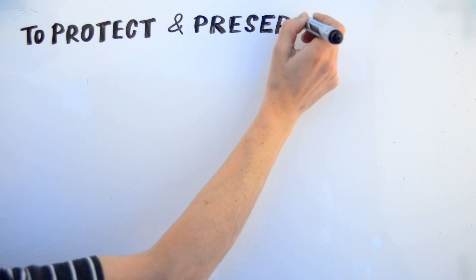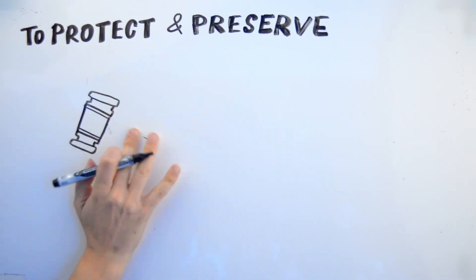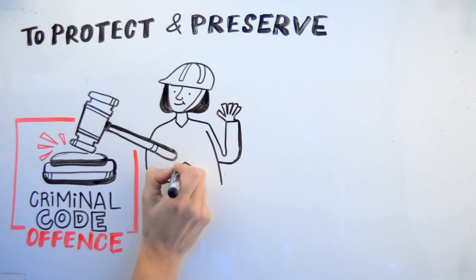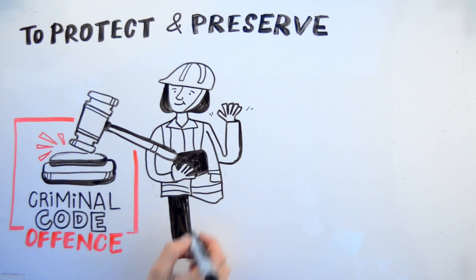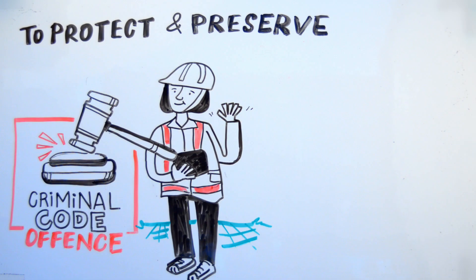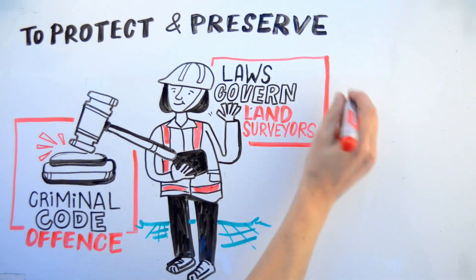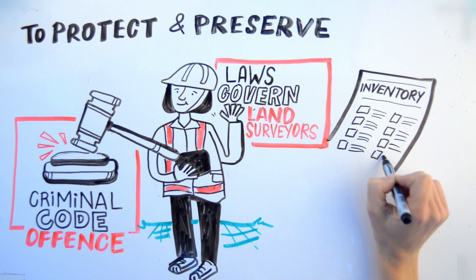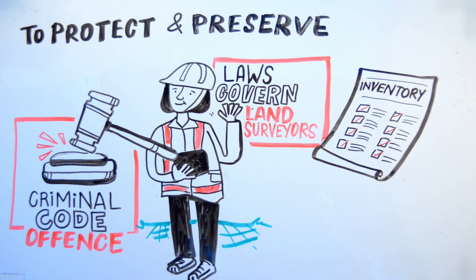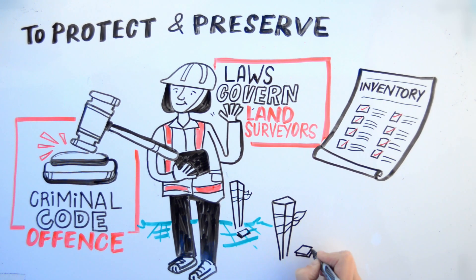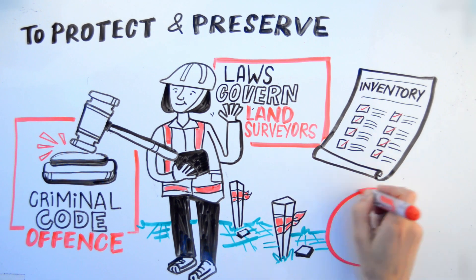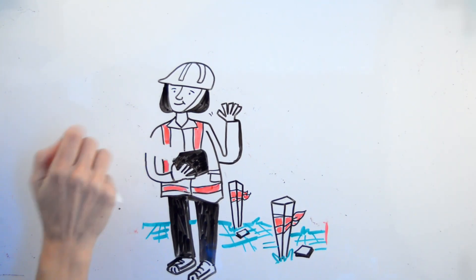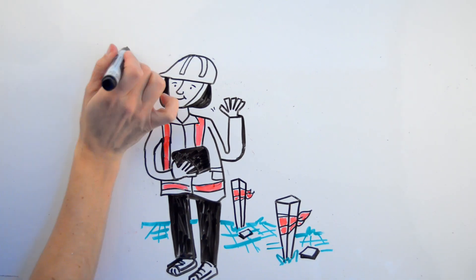What's in place to protect and preserve survey infrastructure? It is a criminal code offense to remove a property monument. There are laws that govern land surveyors when they set property monuments. Standards include inventory of property monuments, installation of visible markers, and the replacement of missing property monuments. There are best practices that promote common utility corridors that avoid disturbing property monuments in new design and during excavation.